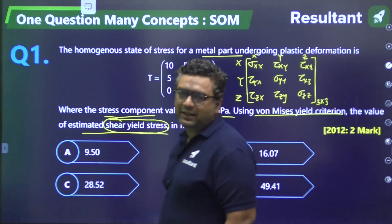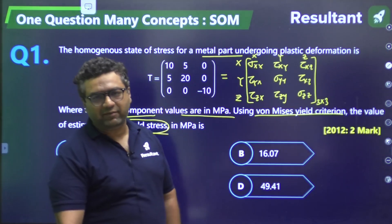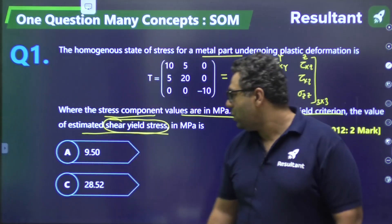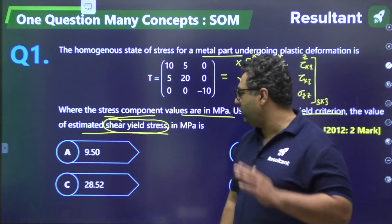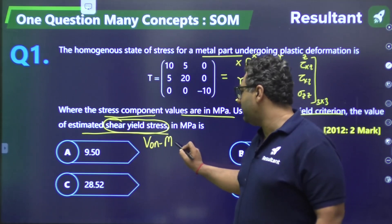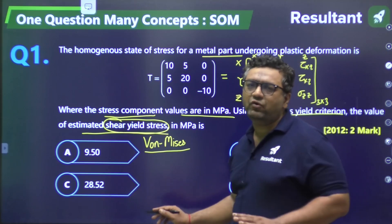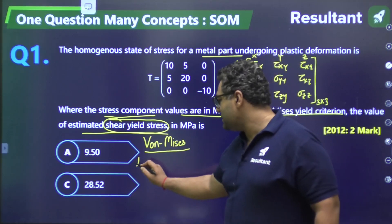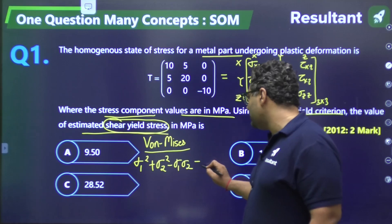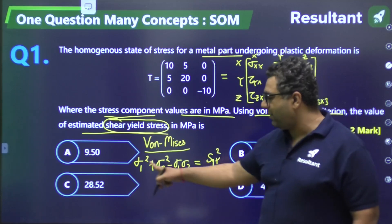By looking at this matrix you can read off the values of sigma_xx, sigma_yy, etc. They are asking for shear yield strength. Von Mises theory — part of theory of failure — gives the formula: sigma_1² + sigma_2² − sigma_1·sigma_2 = SYT² / n². This is one key concept that will be utilized.